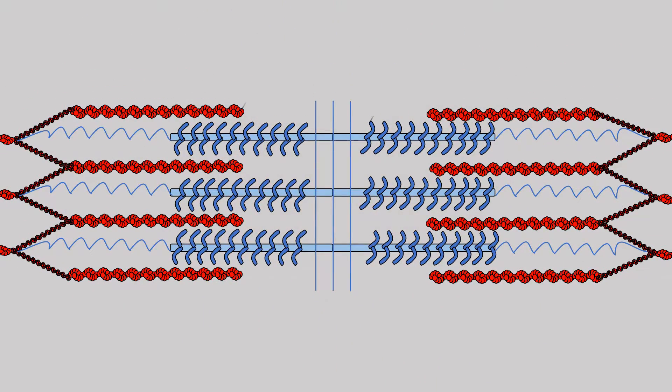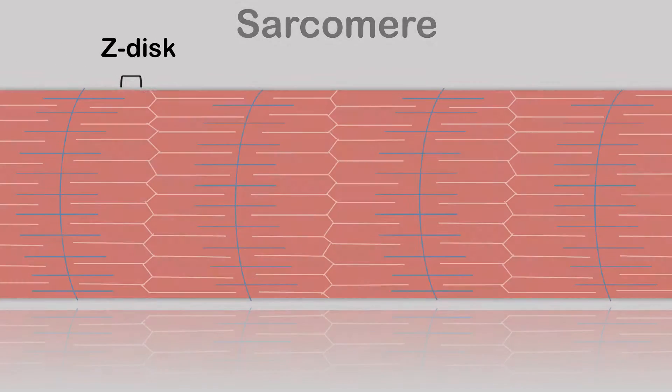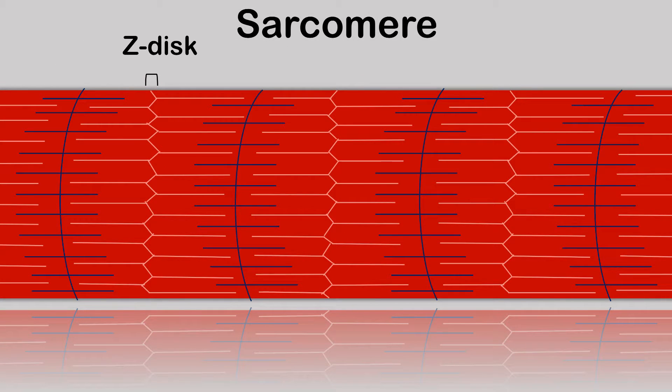So if we zoom out back to the sarcomere, we have our actin, myosin, and we also have this winding filament called titin. This is a giant protein and acts almost like a molecular spring to help with muscle elasticity. It connects the Z-disc, which as you can see here separate each sarcomere unit, to the M-line, which is the middle of the sarcomere unit.